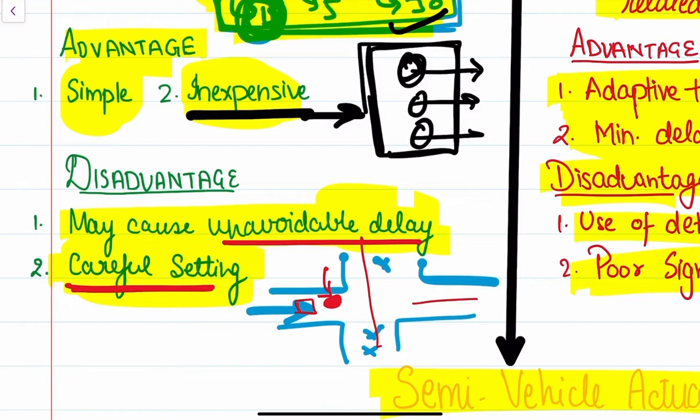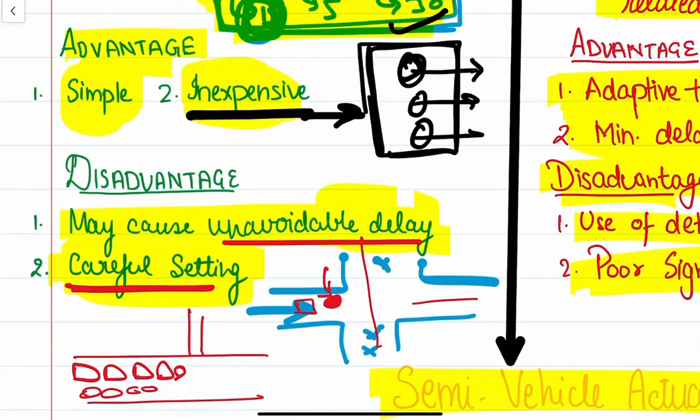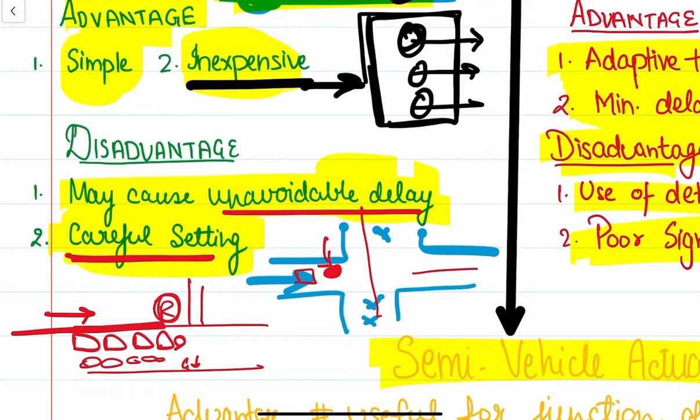We also have to be very careful in setting the time period for red, amber, and green light. For instance, if there is a major road crossing a minor road and the major road has a lot of traffic volume, but we allot too much red time and too little green time, the queue on that road section will increase. Since it is a fixed time, whatever we have allotted will remain fixed.